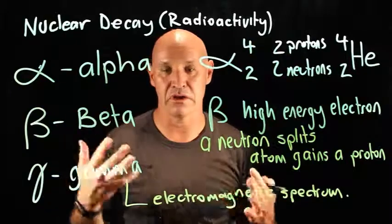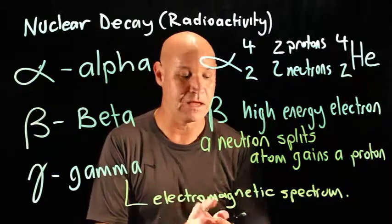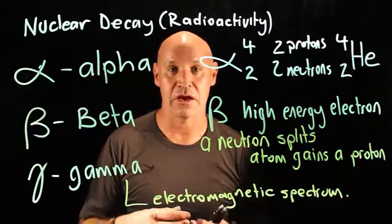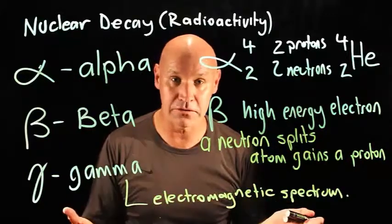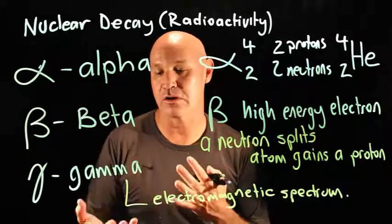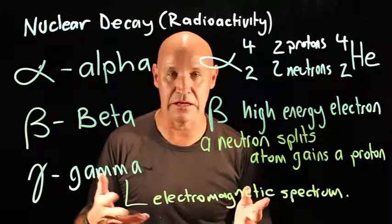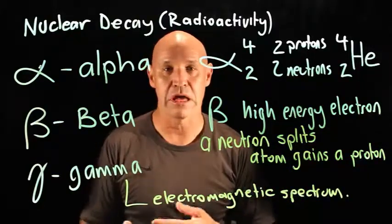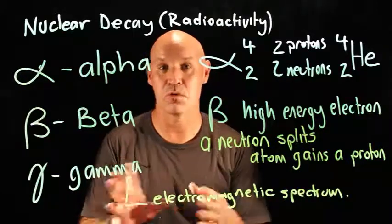So when gamma radiation gets released, it's just lots and lots of energy. Now that energy can have some negative health effects, but also can be used in industry in other ways as well. But primarily we know it as having negative health effects.